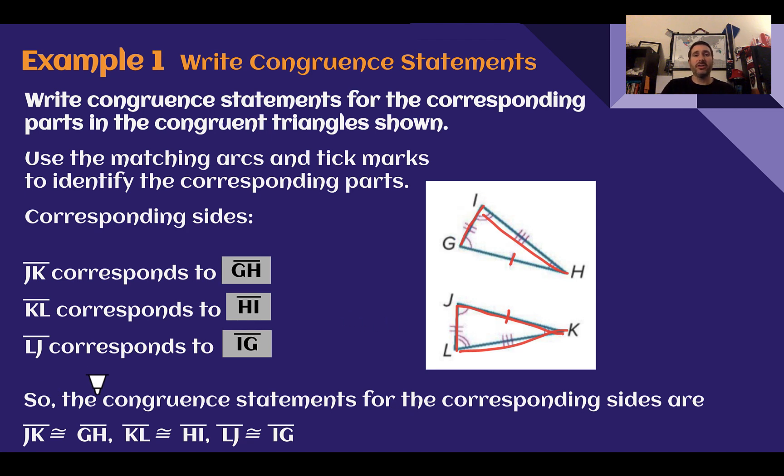So our congruent statements for the sides. Segment JK is congruent to segment GH. Segment KL is congruent to segment HI. Segment LJ is congruent to segment IG. If you have the letter switched around, it will mean the same thing. So if you put HG instead of GH, it will mean the same thing.